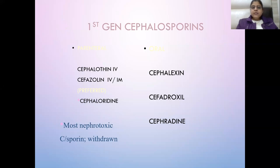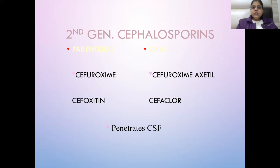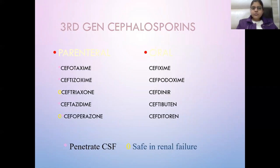For the first generation, parenteral drugs are Cephalothin and Cefazolin, and oral drugs are Cephalexin and Cefadroxil. The most nephrotoxic cephalosporin is Cephradine and it has been withdrawn. For the second generation, parenteral drugs include Cefuroxime and Cefoxitin, and oral drugs are Cefuroxime axetil and Cefaclor. Second generation drugs penetrate the CSF. Third generation drugs end with 'ime', 'one', or 'ine'.